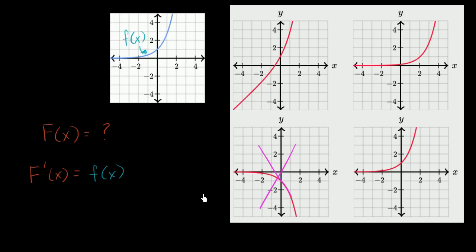What else do we know? Well, this is the derivative — it's telling us the slope of the tangent line. For example, when x is equal to negative four, f of negative four is pretty close to zero, slightly more than zero. So that tells us that the slope of the tangent line of capital F of x has to be pretty close to zero when x is equal to negative four. When x is equal to negative four here, this slope looks closer to one, so we can rule this one out.